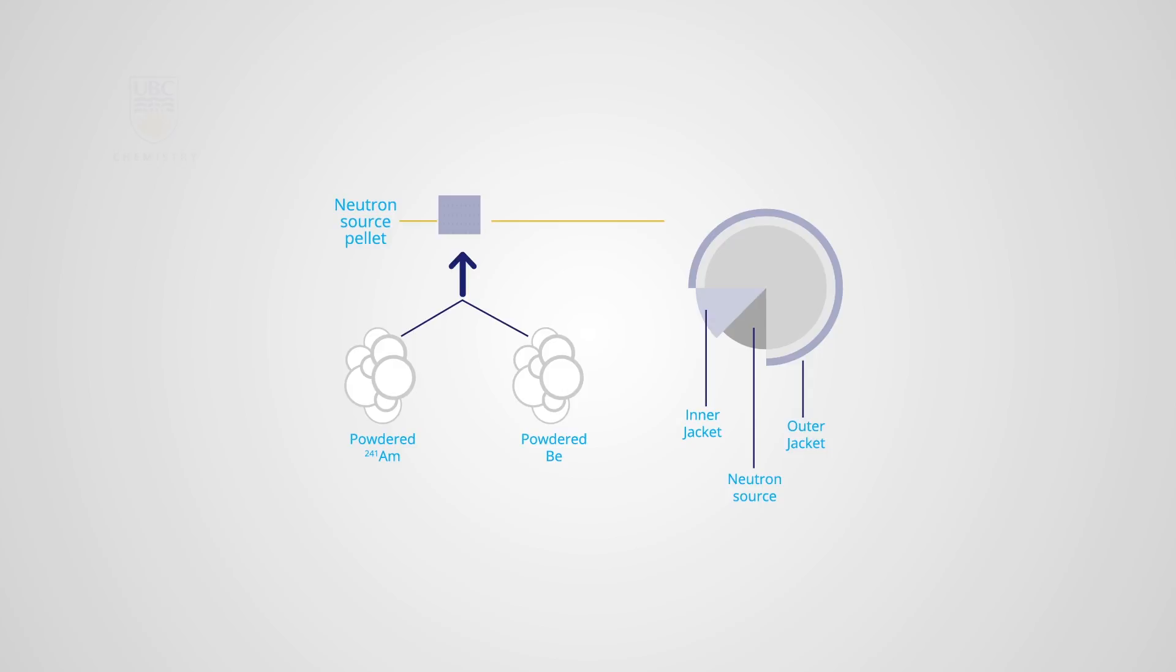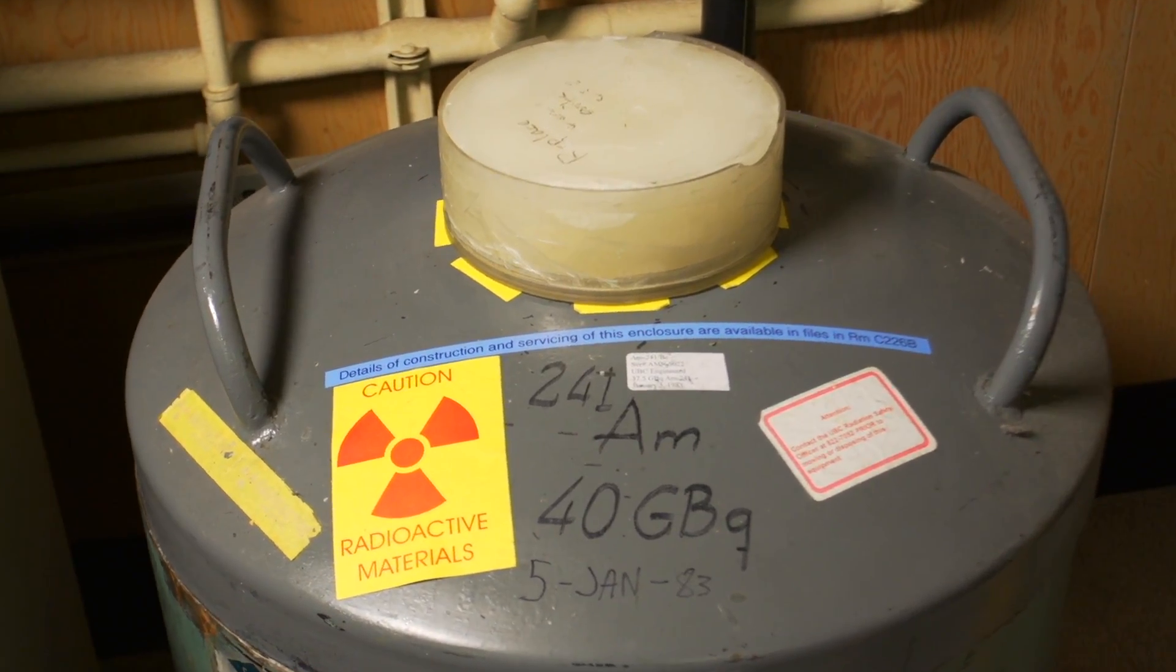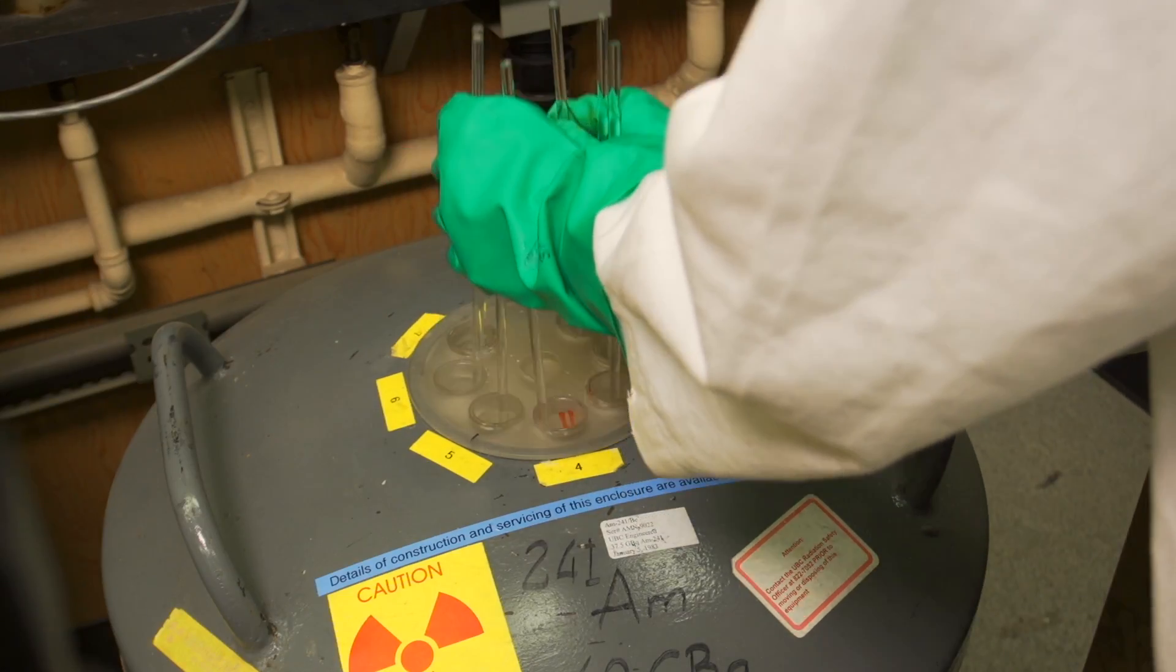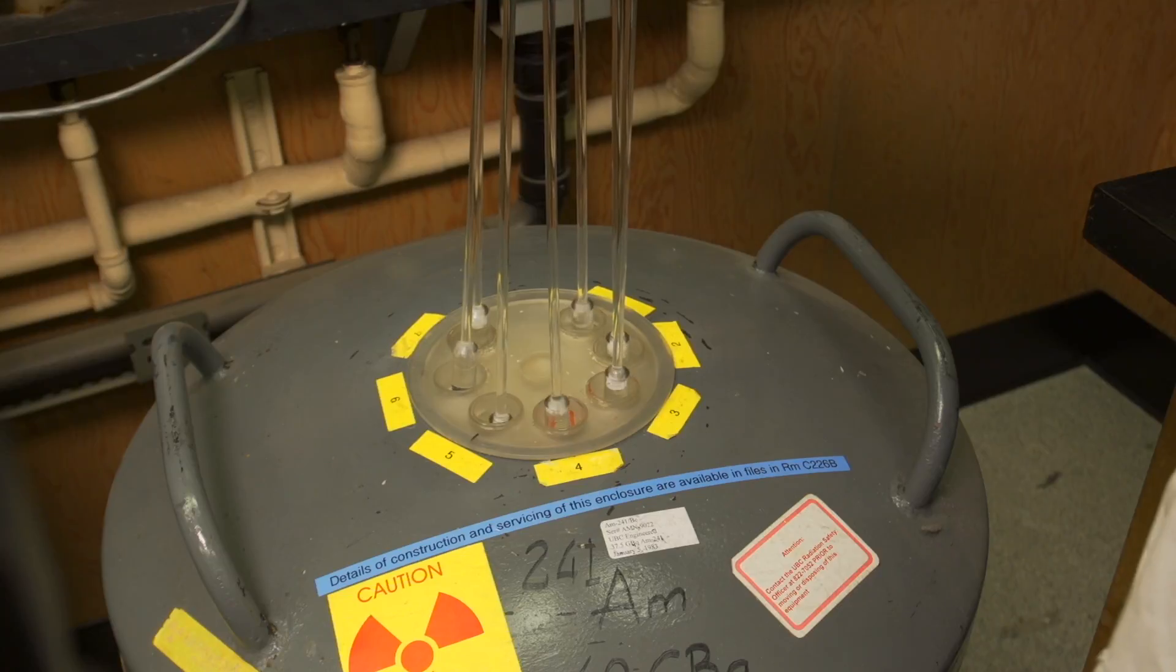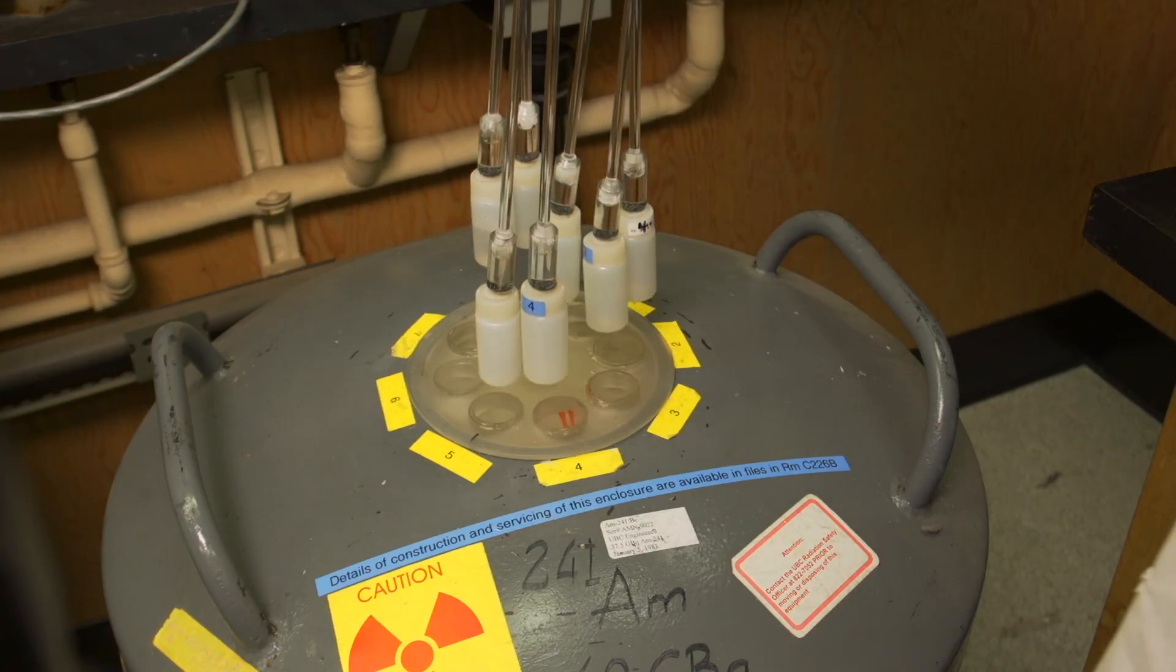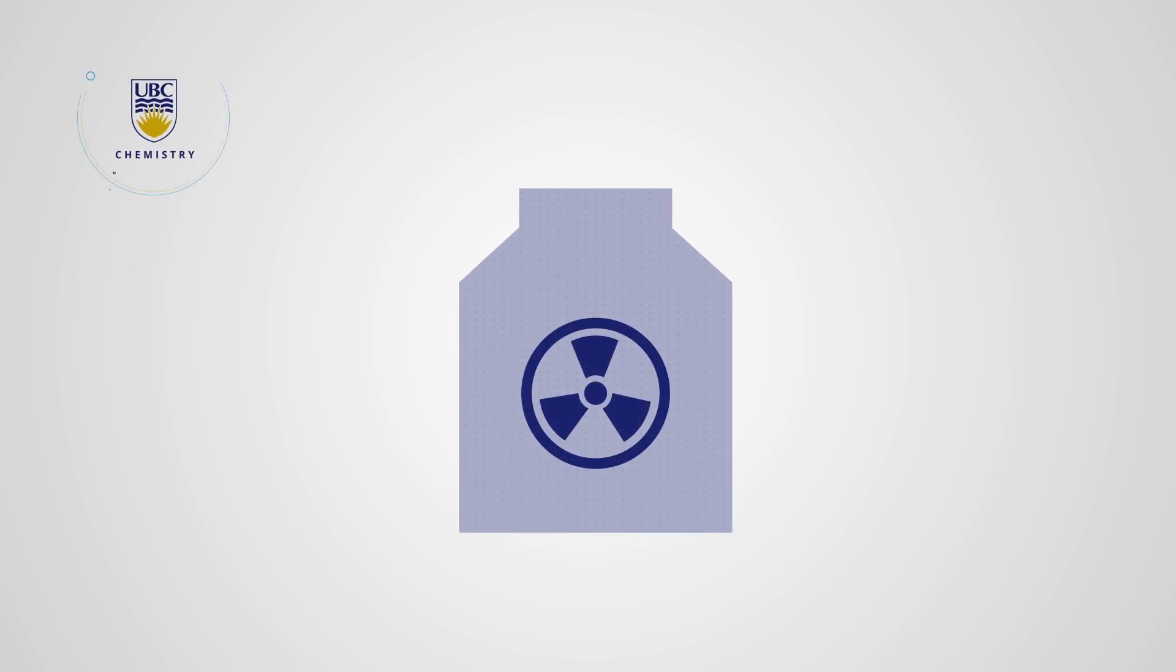The source has an activity of one curie. Neutron activation analysis begins with the sample being bombarded with neutrons. This process takes place in the activation well. Due to the fact that the neutron source is radioactive, it's not possible for us to show you the inside. However, the cross-sectional diagram shown gives you an idea of the setup.